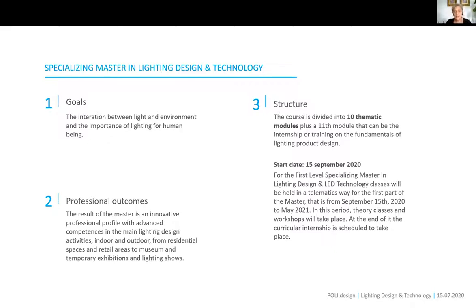The course is divided into 10 thematic areas such as fundamentals of lighting, LED technology, lighting software, smart lighting, and workshops on hospitality lighting, retail lighting, outdoor lighting, and so on. The start date of the first-level specializing Master in Lighting Design and LED Technology is 15th September 2020, and the first part — theory lectures and workshops — will be held in telematic form from September to May 2021.